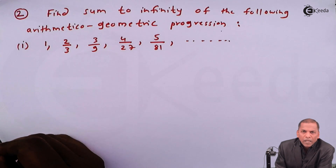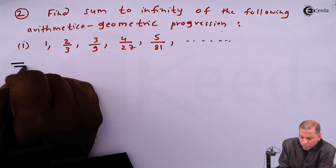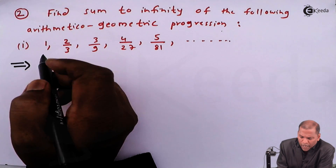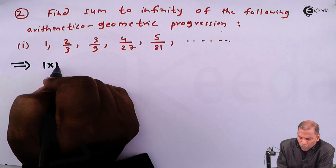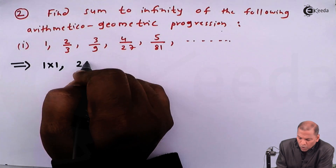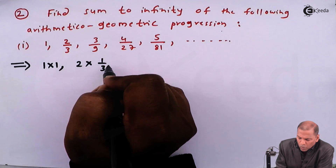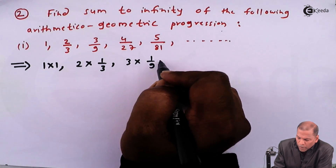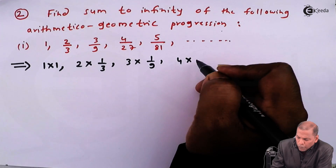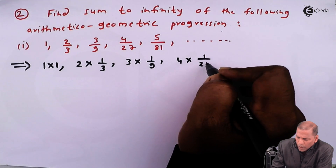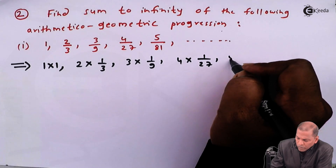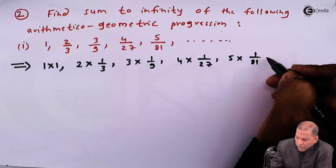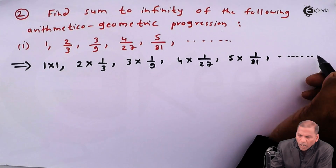Now let's see the solution. The given terms can be written as 1×1, 2×(1/3), 3×(1/9), 4×(1/27), and 5×(1/81), and so on.